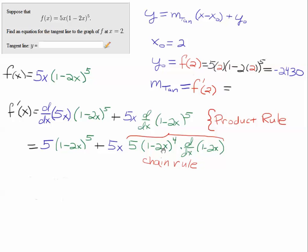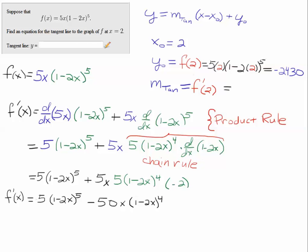We'll complete that derivative, and everything else was left alone, but this term also is left alone. But then we take the derivative of 1 minus 2x, and we get a minus 2. Now that we have our derivative, I simplified it a little bit. 5 times 5 is 25, times minus 2 is minus 50. We can actually compute the slope.